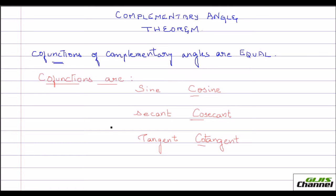Normally we know the six trigonometric ratios. We make co-functions out of them — sine and cosine are co-functions; you can see the letter 'co'. Secant and cosecant are co-functions. And tangent and cotangent are co-functions. The co-functions of complementary angles are equal.